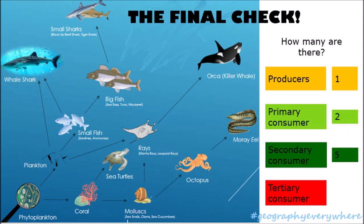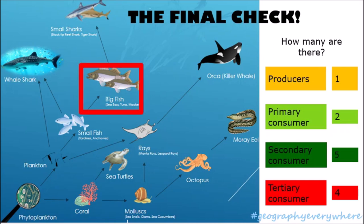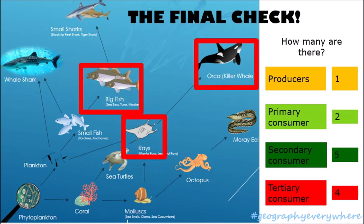How many tertiary consumers are there? There are four: the big fish, who eat the small fish, who eat the plankton; the orca, who eats the ray, who eats the plankton; the ray, who eats the sea turtle, who eats the coral; and the octopus, who eats the mollusc, who eats the coral.